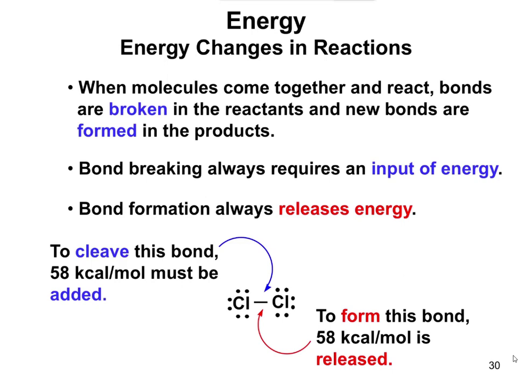As you see in this slide, to cleave a bond — in this particular situation between two chlorines — 58 kilocalories per mole have to be added to break the bond. And then to form the bond, 58 kilocalories per mole would be released. That number will be different depending on the molecule you're looking at.